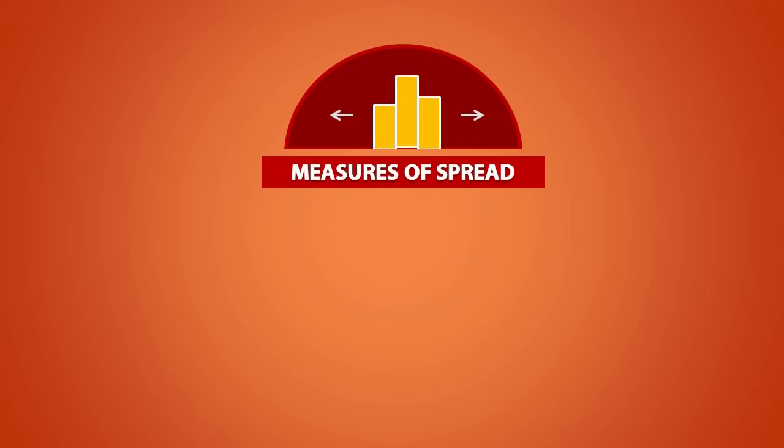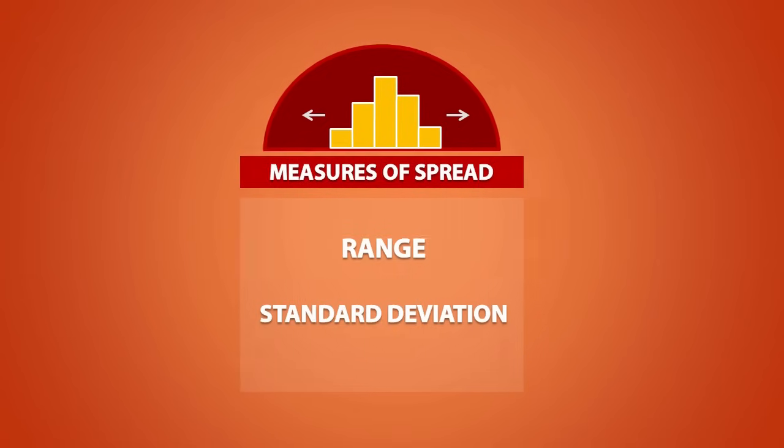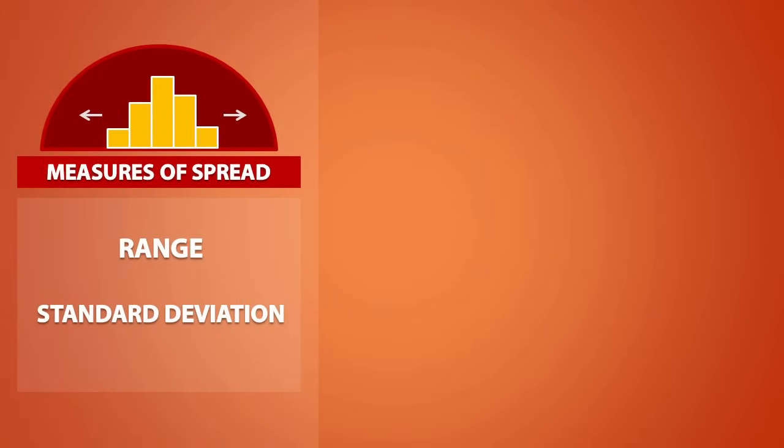Now let's talk about the measures of spread. This includes the range and standard deviation. Both of these values measure spread in a different way. The range is simply the maximum minus the minimum, so it tells us how much room a distribution takes.